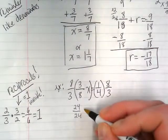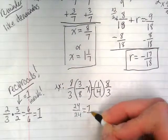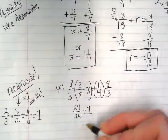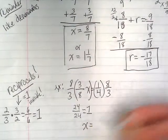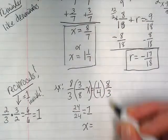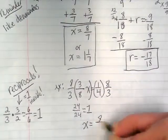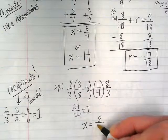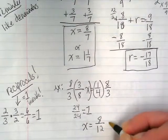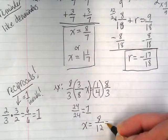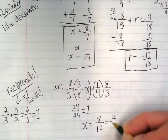That equals 1, which is what we want. That means on the left side, we have our invisible 1 with our x, and on the right side, we're going to do 1 times 8 is 8. 4 times 3 is 12. And that can be reduced to 2 over 3.